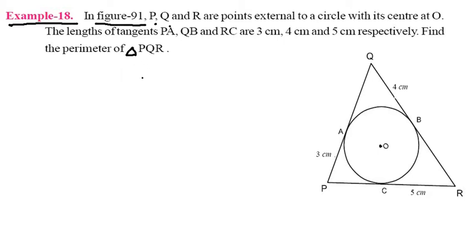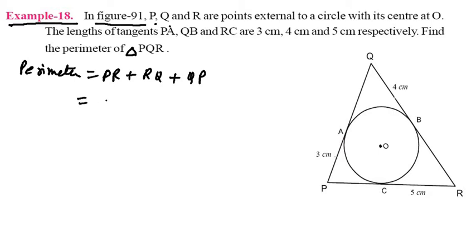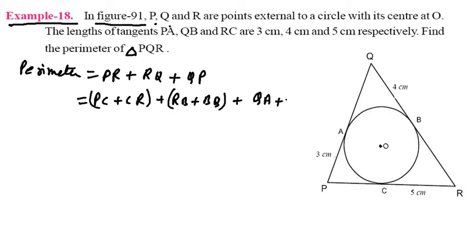The perimeter of triangle PQR equals PQ plus QR plus RP. Now PR can be broken into two parts: PC plus CR. Similarly RQ equals RB plus BQ, and QP equals QA plus AP. Now put all these values: PA equals PC equals 3 centimeters, since tangents from an external point are always equal.